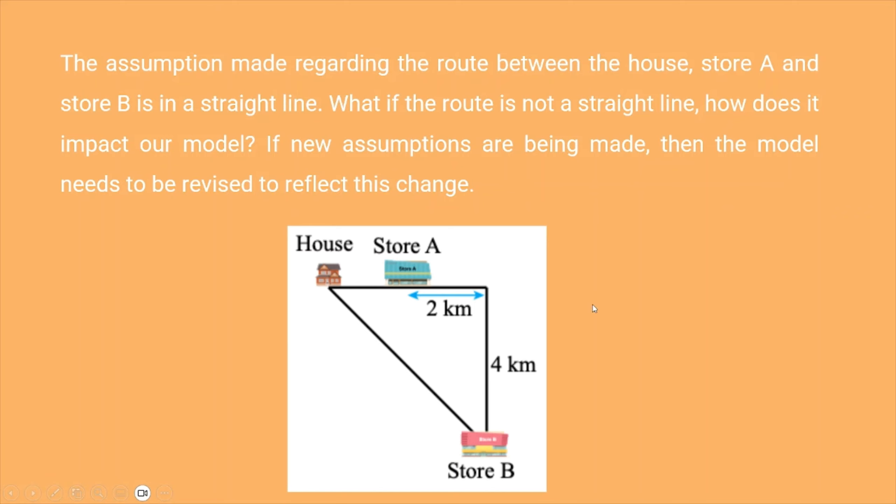So one of the assumptions mentioned, instead of a straight line, there's a possibility that you can go straight away from your house to store B instead of going to store A. This will change the situation and new assumptions are being made, so the model needs to be revised and so on.